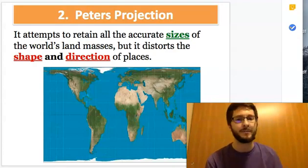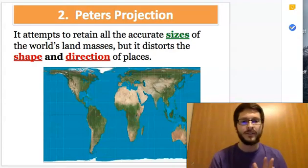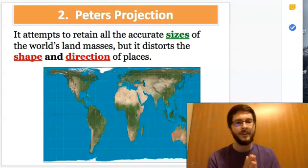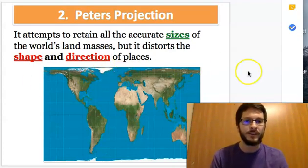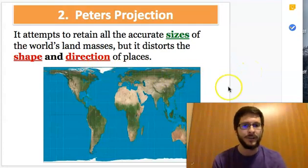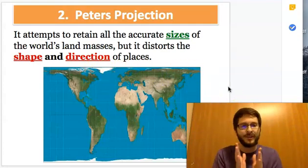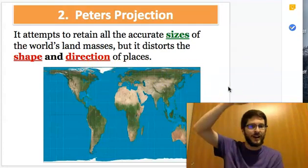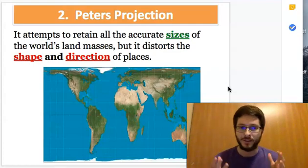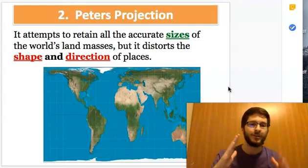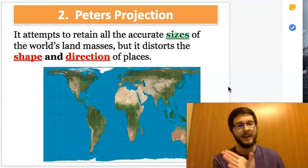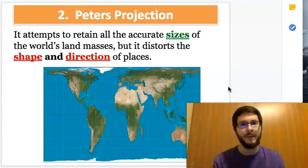So the next one is called the Peter's Projection. Its goal was to keep the size accurate of everything, so this time you can see that, hey, Greenland isn't a monstrosity and Russia isn't either, but you'll obviously notice that it looks like you took an image and stretched it. That's literally what that map looks like. So it distorts shape, it distorts direction, so if you try to navigate from point A to point B on this map, it's not going to work out perfectly.